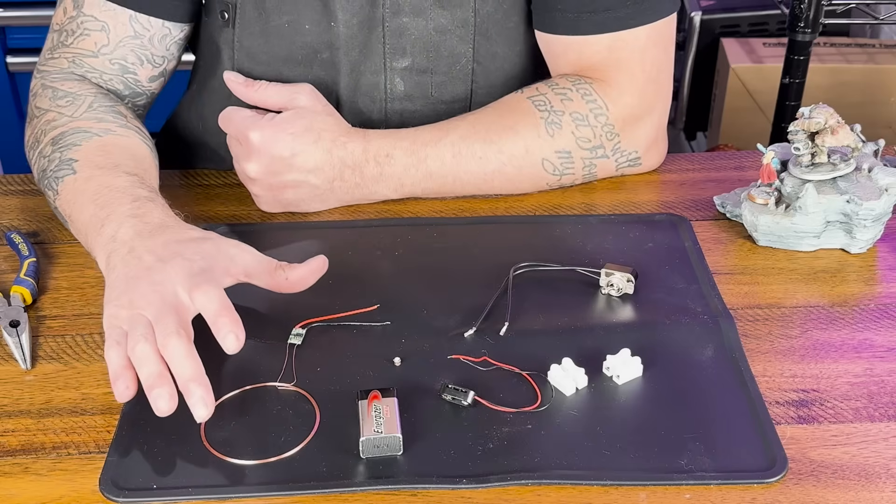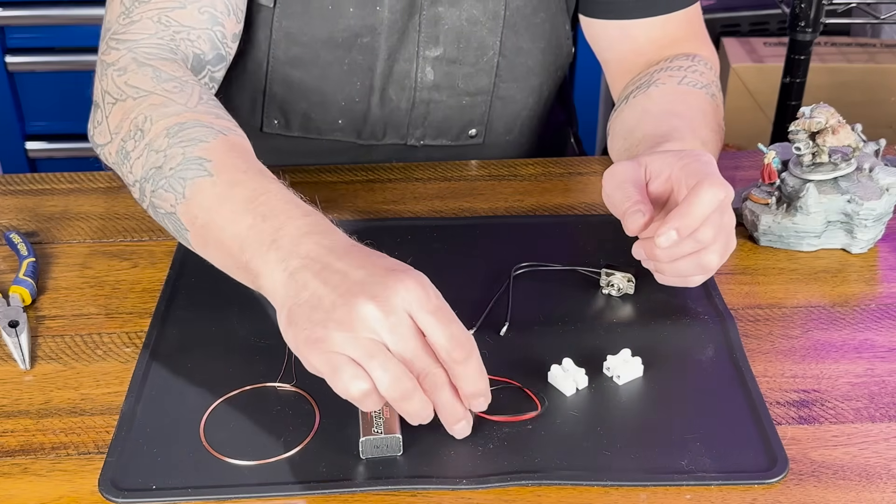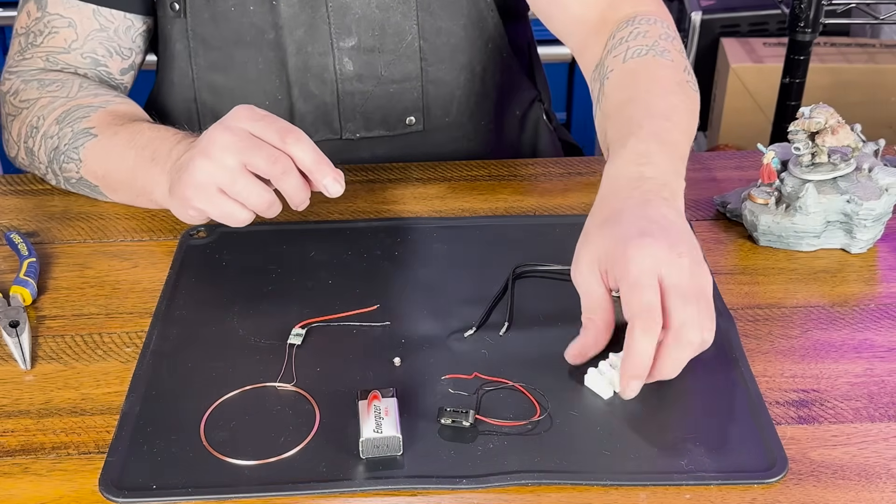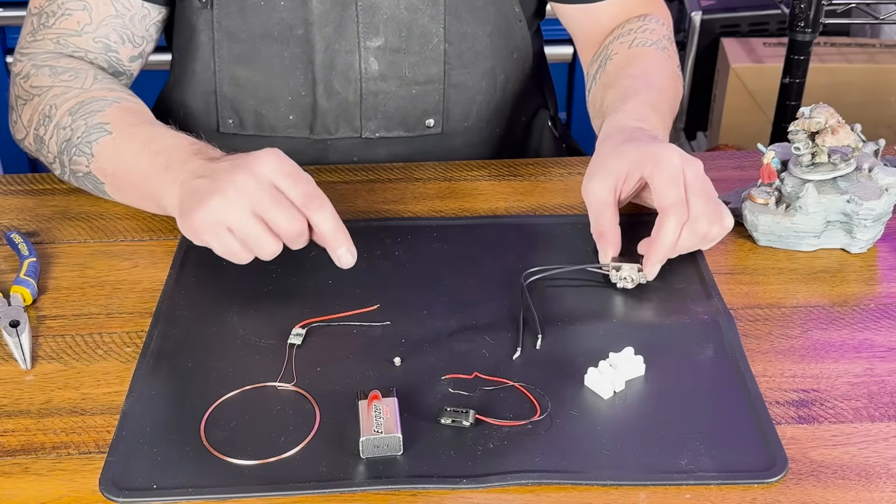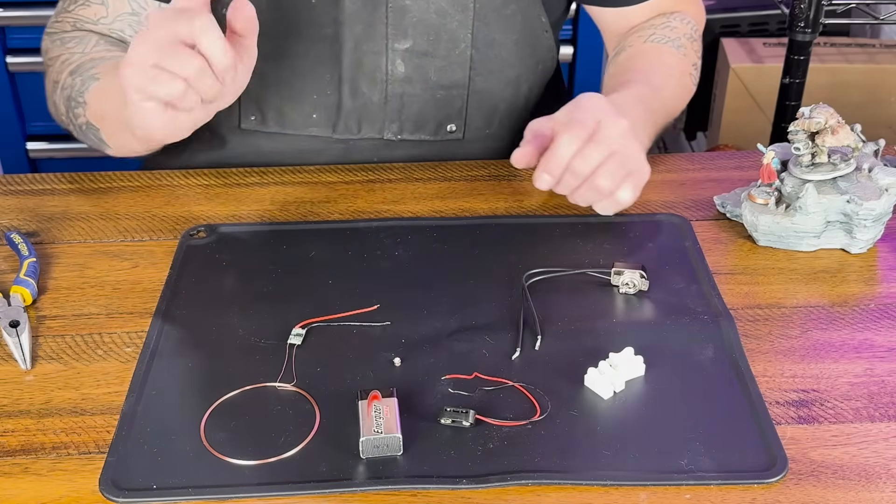Now enough of the nerdy stuff, let's build the circuit. We have our coil right here, we have our connector for a 9-volt battery, we have a couple of quick connects, we have our switch, and we have our wireless LED.